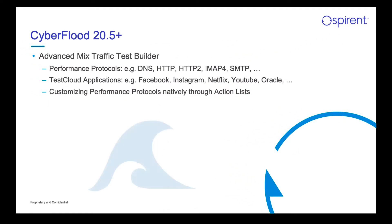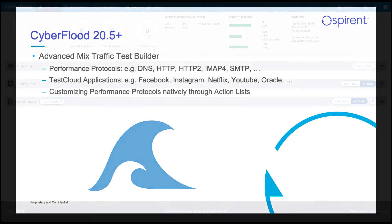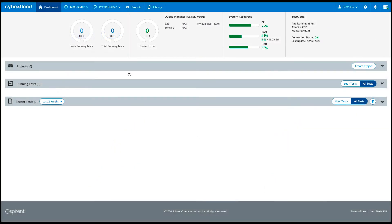In this quick video we will demonstrate how to use the advanced mixed traffic test builder with customizable performance protocols such as HTTP, HTTP/2, FTP, and so forth, which gives flexibility to modify their parameters. We will also add a couple of popular test cloud applications such as Facebook and Oracle, then run the test and have a quick look at the reporting.